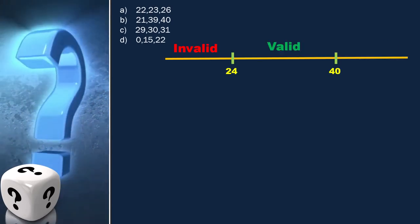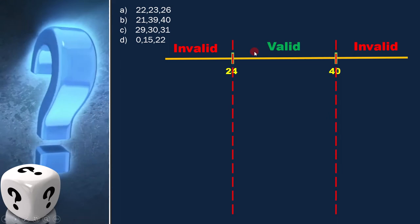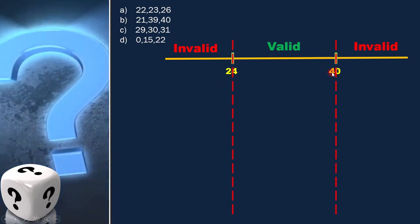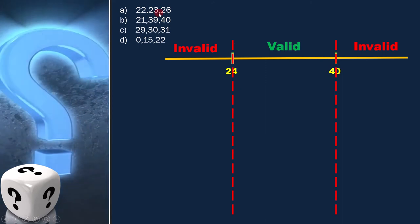Let's first draw the equivalence class diagram. As per the question, values in the range 24 and 40 are valid. Now, let's have a look into the options.